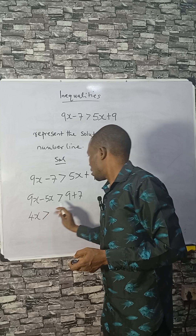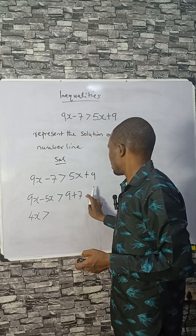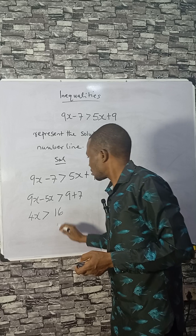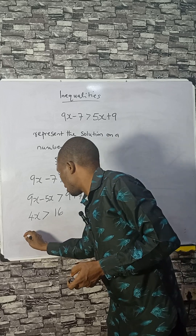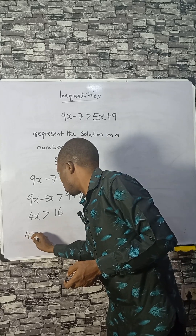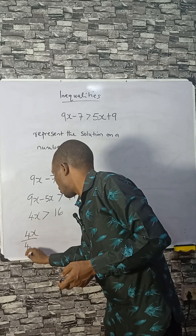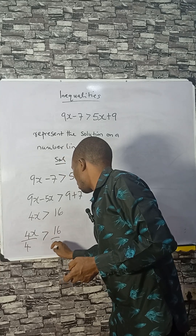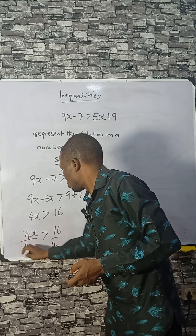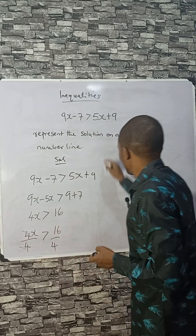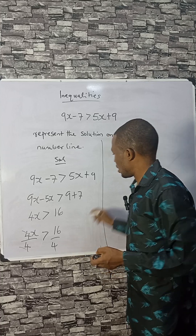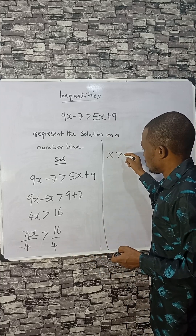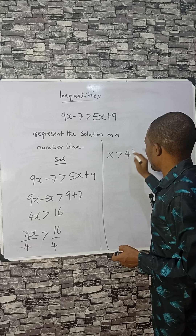9x minus 5x is 4x, which is greater than 9 plus 7, which is 16. Now we have to divide both sides by 4 to make x stand alone, so we'll have the answer as x greater than 16 divided by 4, which is 4.